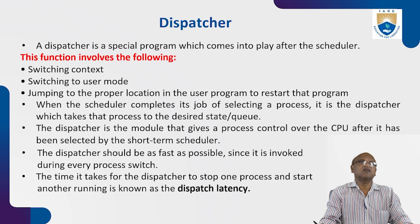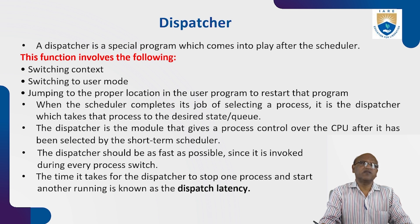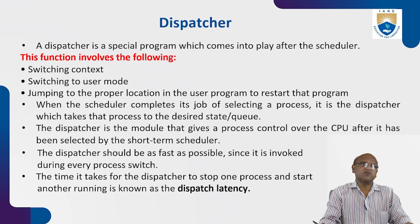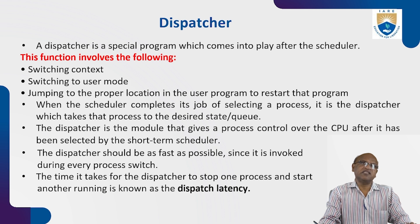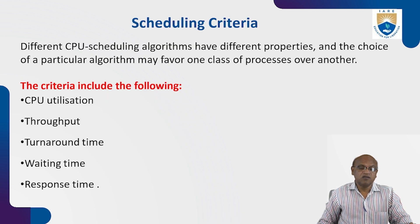When the scheduler completes its job of selecting a process, it is the dispatcher that takes the process to the desired state and queue. The dispatcher is a module that gives process control over the CPU after it has been selected by the short-term scheduler. The dispatcher should be as fast as possible since it is invoked during every process switch. The time it takes for the dispatcher to stop one process and start another is known as dispatch latency.